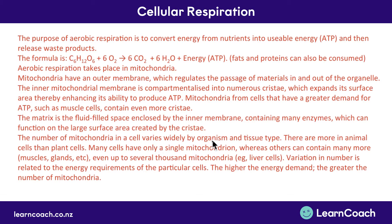The number of mitochondria in a cell varies widely by organism and tissue type. There are more in animal cells because animals are more active than plants, and many cells have just one mitochondrion, whereas really active cells — muscles, glands, liver — might have several thousand. Variation in number is directly related to the energy requirements of each cell: the higher the energy demand, the greater the number of mitochondria. And that is cellular respiration.